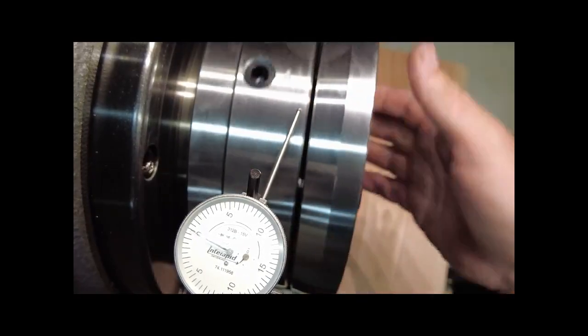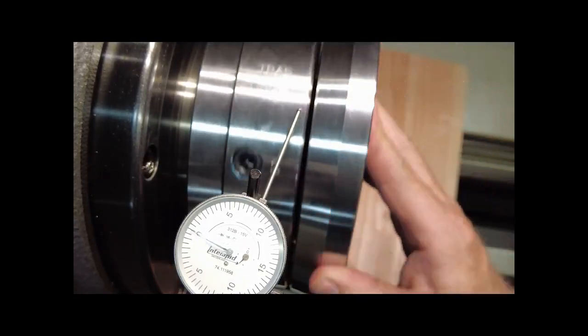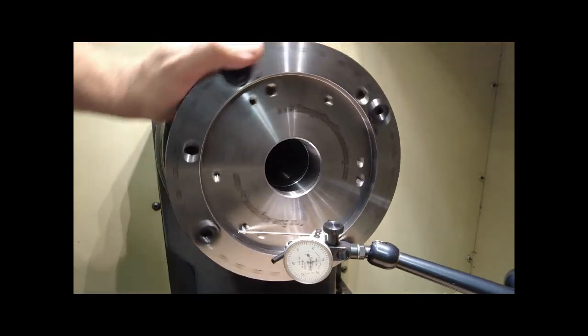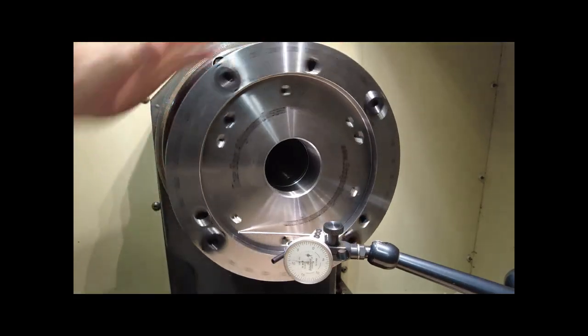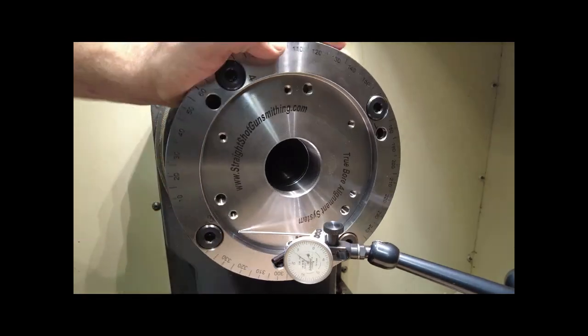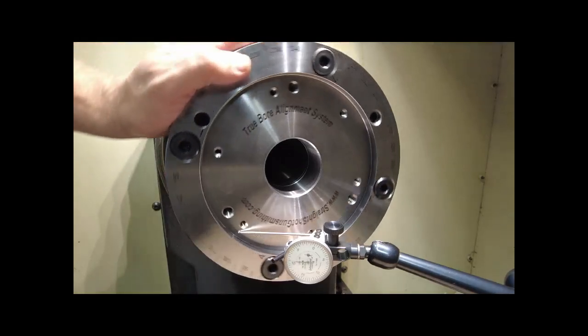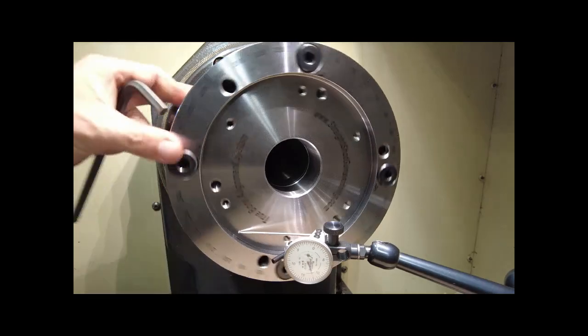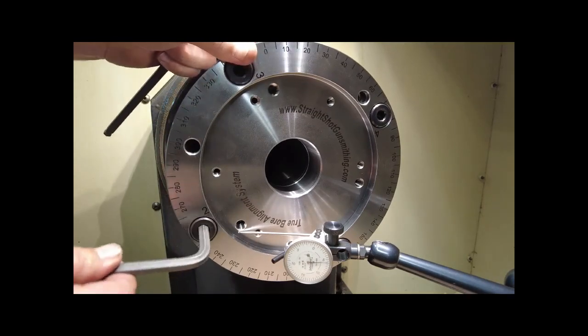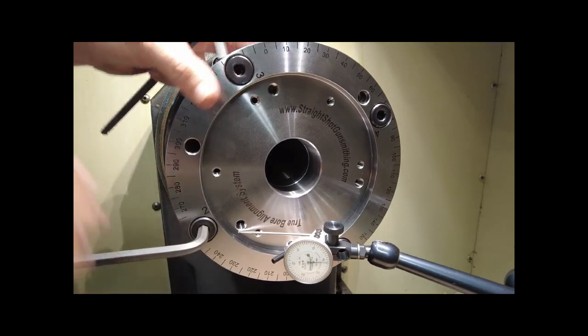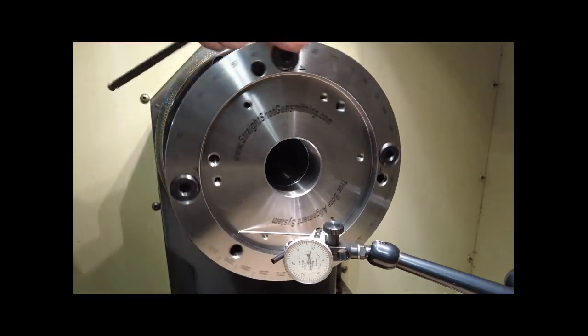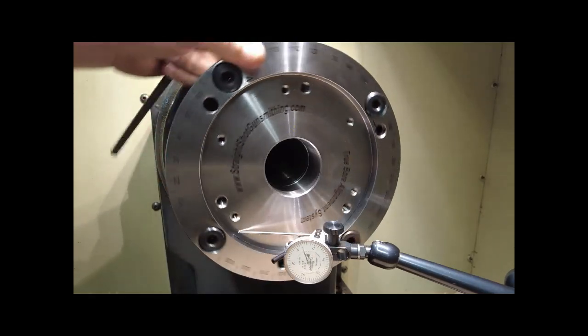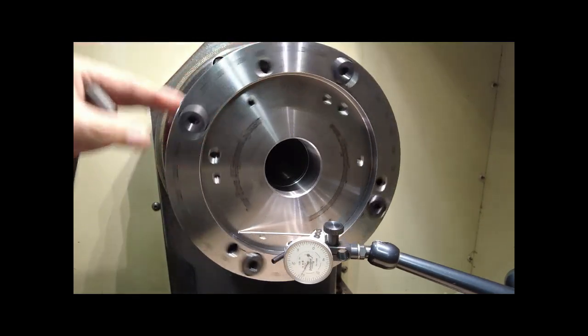Now we have it close to one thousandth. Now that we have it under one thou we can move to the face. With the test indicator placed on the face of the Truebore alignment system we can now bring the face into alignment. We will first find the high position on the face and tighten, then find the low position and loosen. Tighten and loosen opposing radial adjustment screws until the face of the Truebore alignment system is within one thou runout.